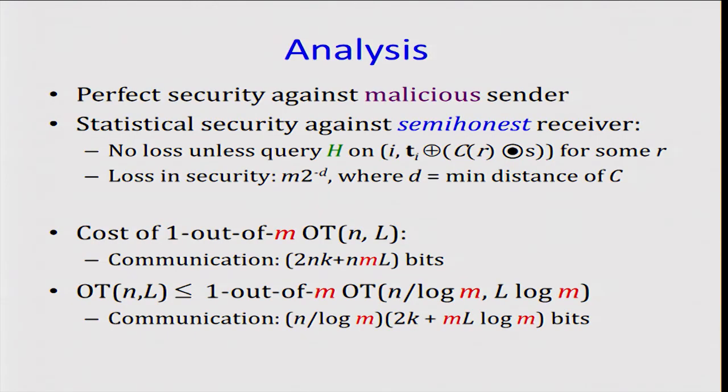The main reduction is perfectly secure against the malicious sender. In particular, the malicious sender gets only the matrix Q, which is just a random independent share of the encoding. Against a semi-honest receiver, we can get statistical security. This is because there is no loss in security unless the random oracle is queried on one of these other paths which are used for masking.